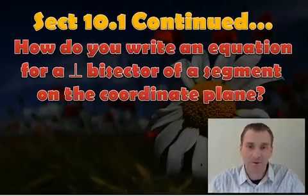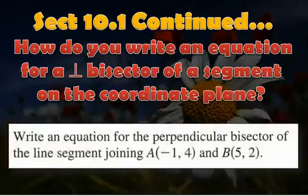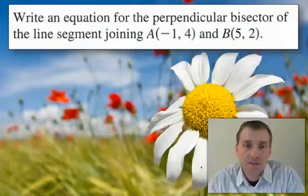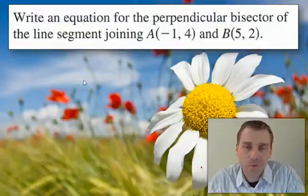But here's the deal. You need to make sure you write that in your notes, but you also need to make sure you write this example, because this example, ladies and gentlemen, is the example we're going to master, dominate, annihilate. I feel like I'm rapping. We're going to be very good at doing these types of questions. So write an equation for the perpendicular bisector of the line segment joining two specific points.